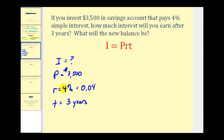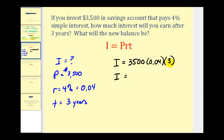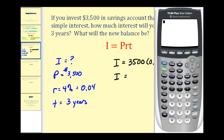We have all the information we need to determine the amount of interest earned in this account. The interest will equal three thousand five hundred — the principal — times the rate of return as a decimal, zero point zero four, times the time in years, which is equal to three. So this product will give us our total interest over the three years: three thousand five hundred times point zero four times three. The interest earned will be four hundred twenty dollars.